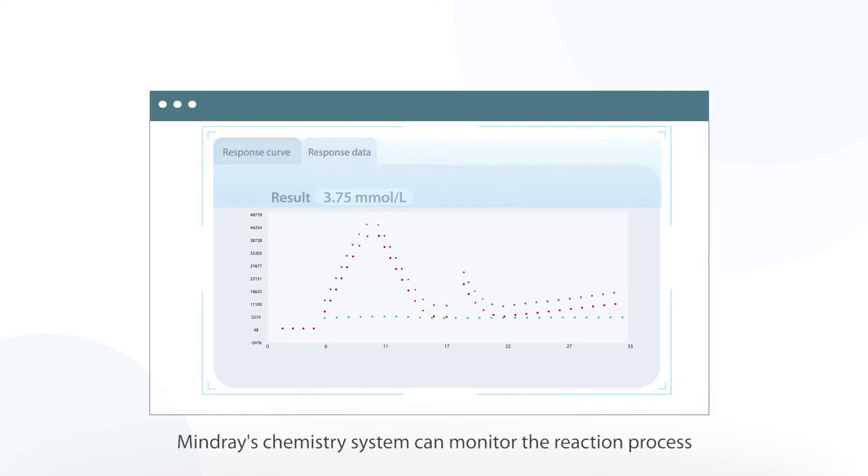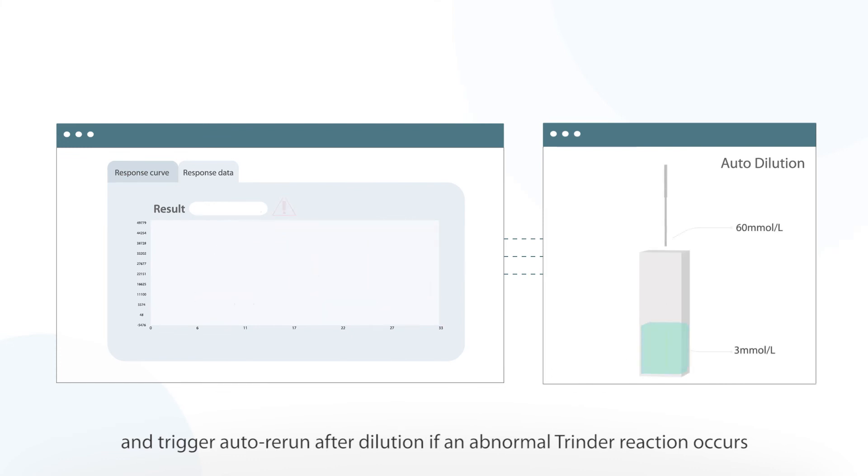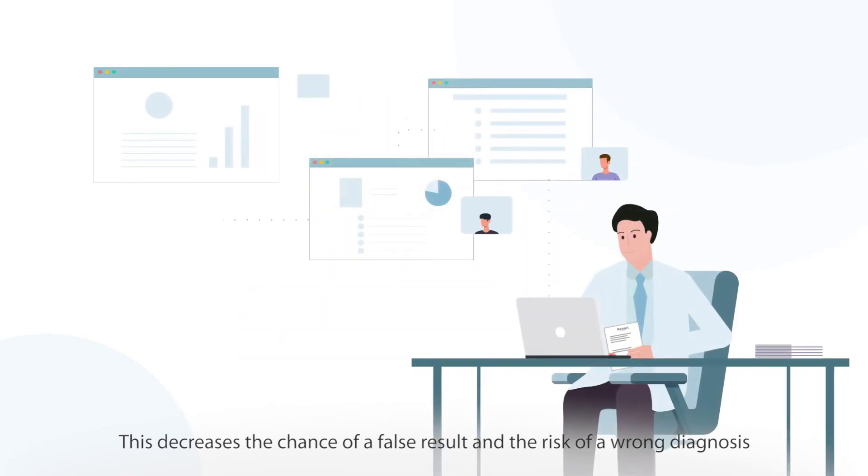Mindray's chemistry system can monitor the reaction process and trigger auto-rerun after dilution if an abnormal Trinder reaction occurs. This decreases the chance of a false result and the risk of a wrong diagnosis.